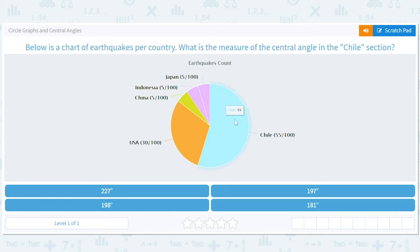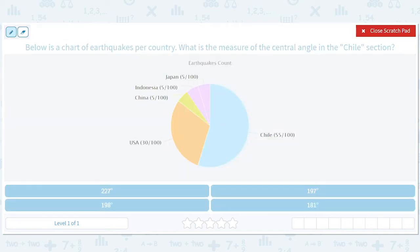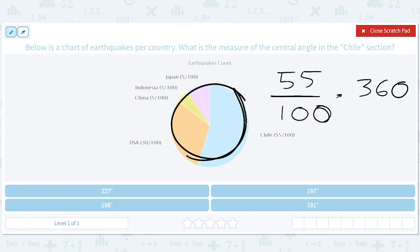So I don't think this is, oh, I guess we're supposed to do this exactly. Okay. So Chile is 55 out of 100, right? So the way to do this exactly is to say it's 55 out of 100 times 360. Because that's the fraction of 360 degrees. There are 360 degrees in a circle. So I have to take 55 over 100 times 360.